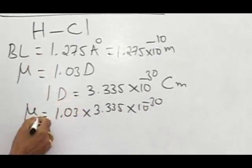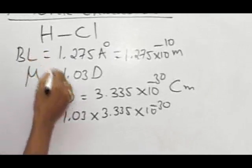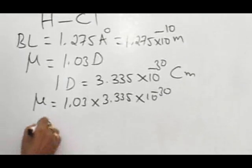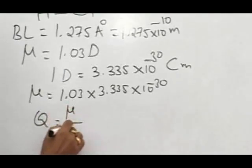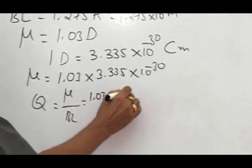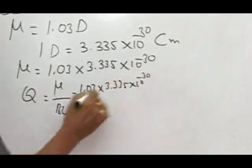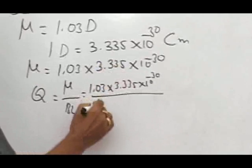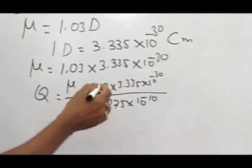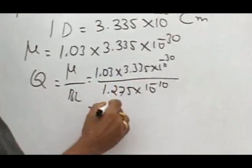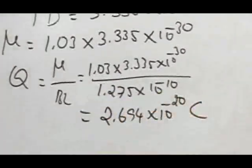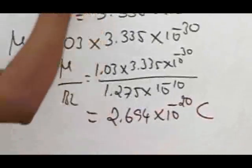Now we have two data: one is dipole moment, another one is the bond length. So next, the third data can be found out, that is charge Q. Q is equal to mu divided by the bond length, that is (1.03 × 3.335 × 10^-30) / (1.275 × 10^-10). When we solve, we get 2.694 × 10^-20 coulomb. This is the charge separation in hydrogen chloride molecule.